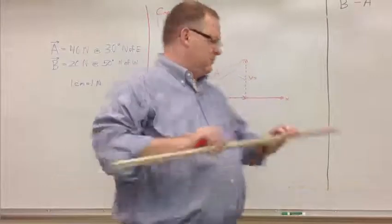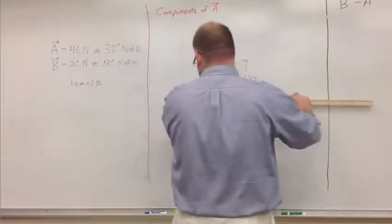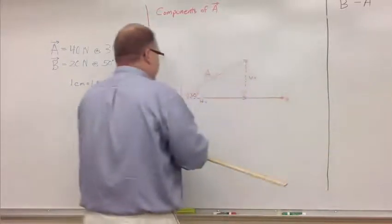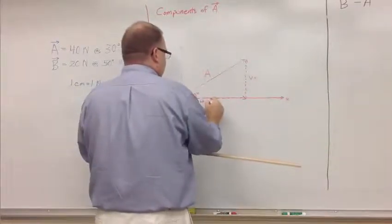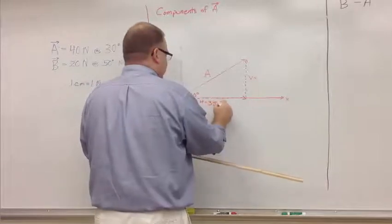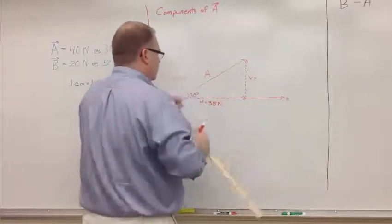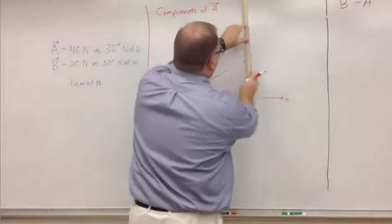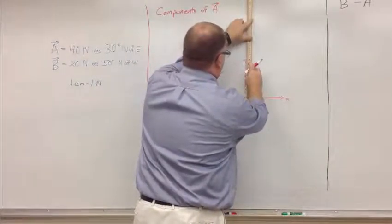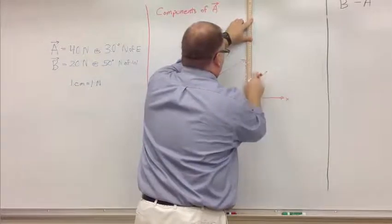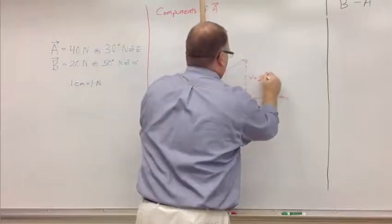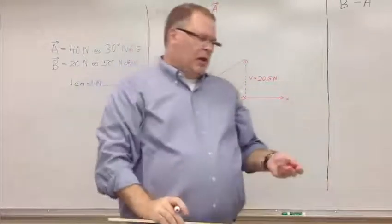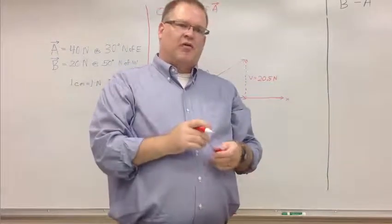It's just a matter of measuring it. I have 35 centimeters, which is 35 newtons. And horizontally, flip this around. I have 20 and a half newtons. And there, I found my vertical and horizontal components.